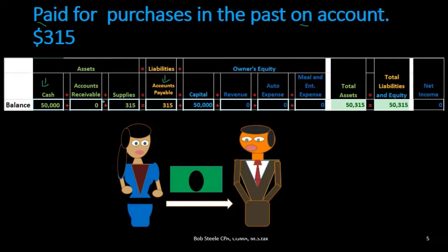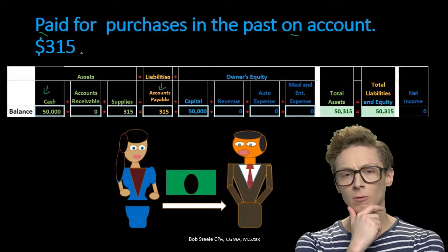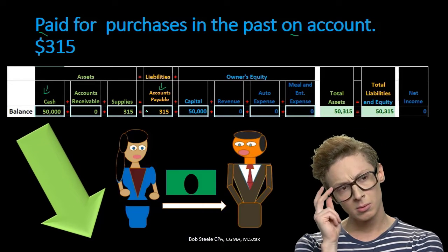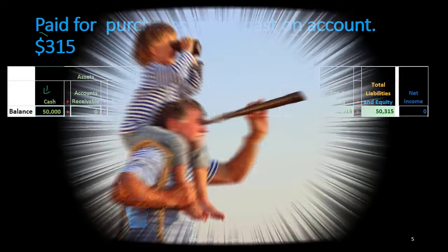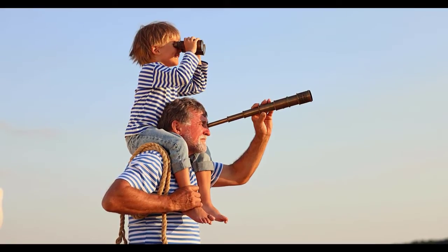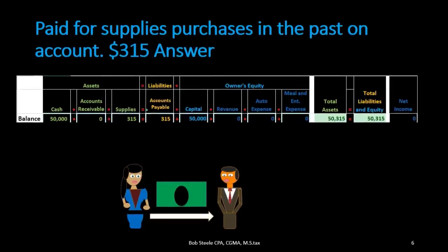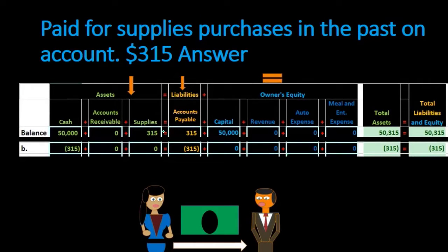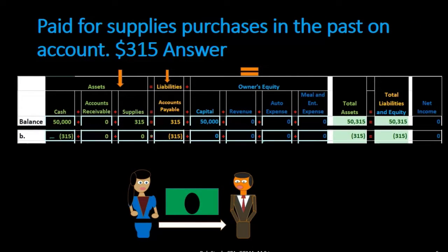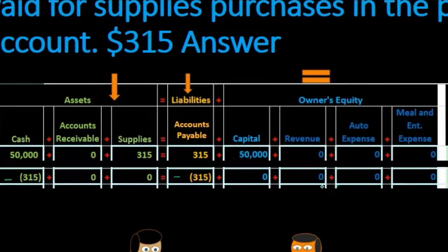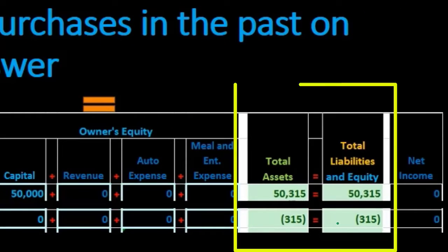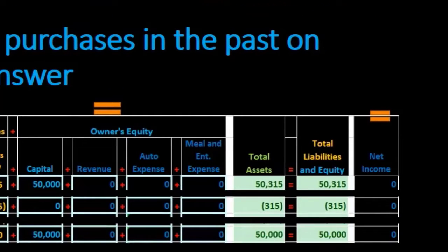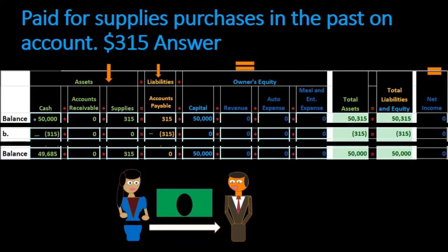We also know accounts payable must go down because it represents what the business owes to a vendor. Within this transaction we are paying that off, so the amount owed needs to decrease. We should double-check ourselves this way. Cash is decreasing and liabilities are decreasing, so total assets are decreasing and total liabilities and equity are decreasing — the accounting equation remains in balance.